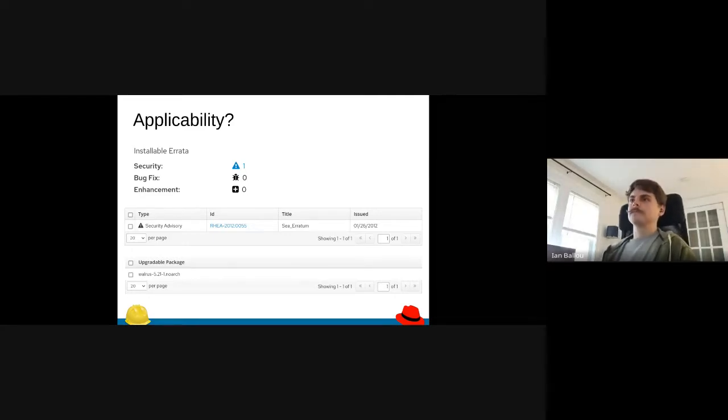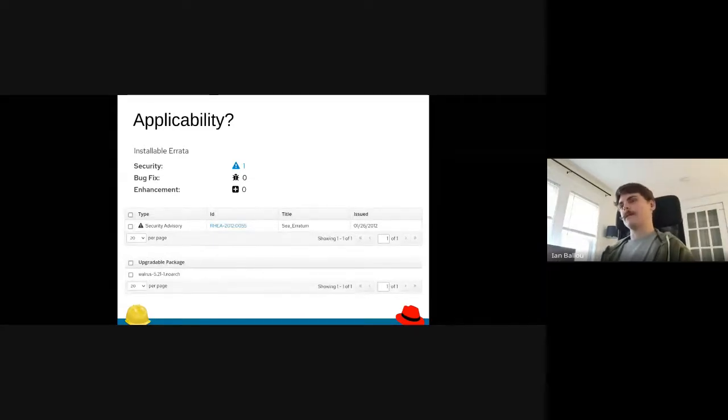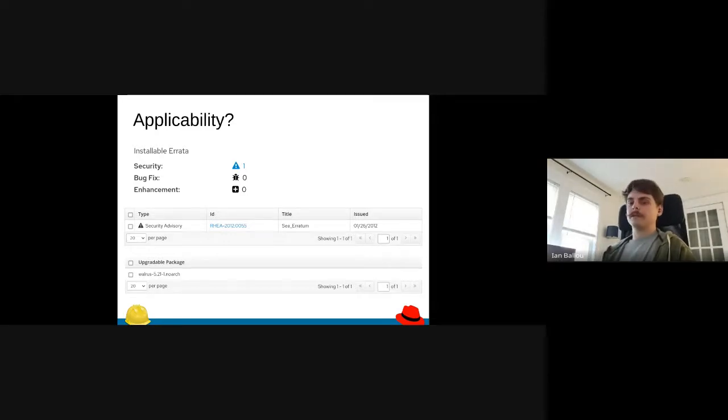If you're using Katello, applicability describes what packages need updates. If you're using yum content, that is typically communicated through errata. You can see something on your host at the top of their installable errata. You'll see some security, bug fix, enhancements, etc. Those are just the categories.